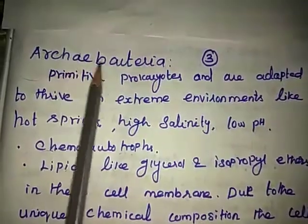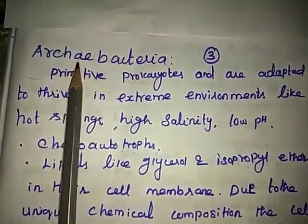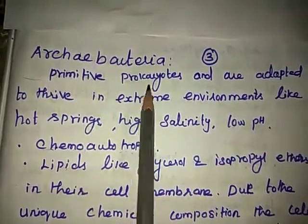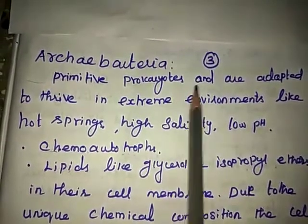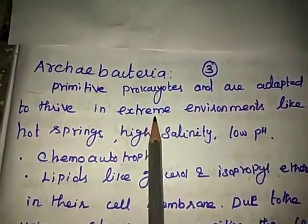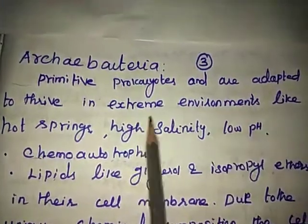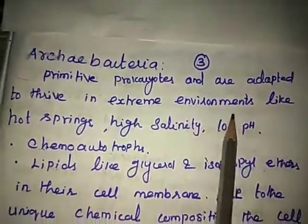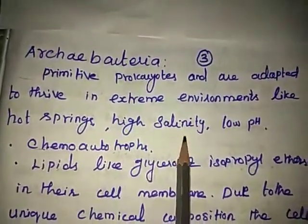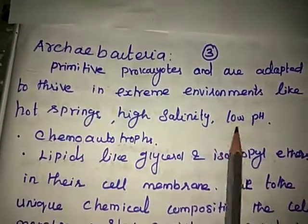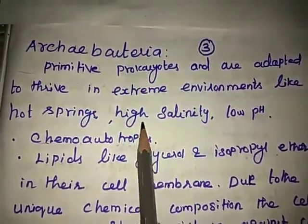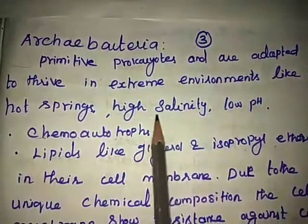We are going to see about Archaebacteria. The Archaebacteria are primitive prokaryotes and are adapted to thrive in extreme environments, like hot springs, high salinity, and low pH. High salinity means a high salt content.